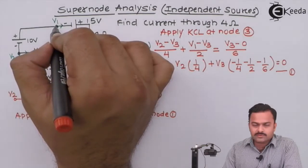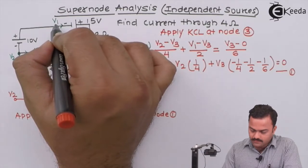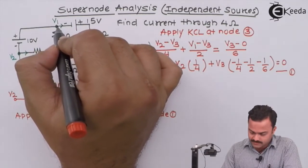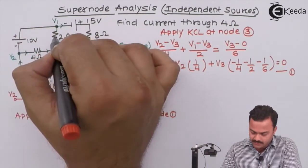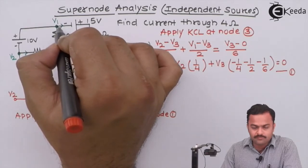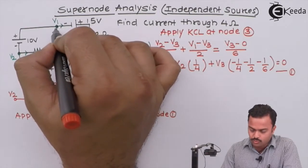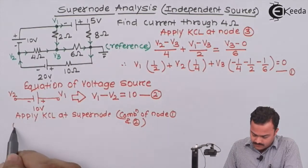Now we will focus on node 1 first. At node 1, we will focus only on the incoming currents. Remember, we have to neglect this branch. So if I neglect this branch, I will get only two branches, and the current directions that I marked for these two branches are outgoing for V1. Hence, no incoming current at node 1.